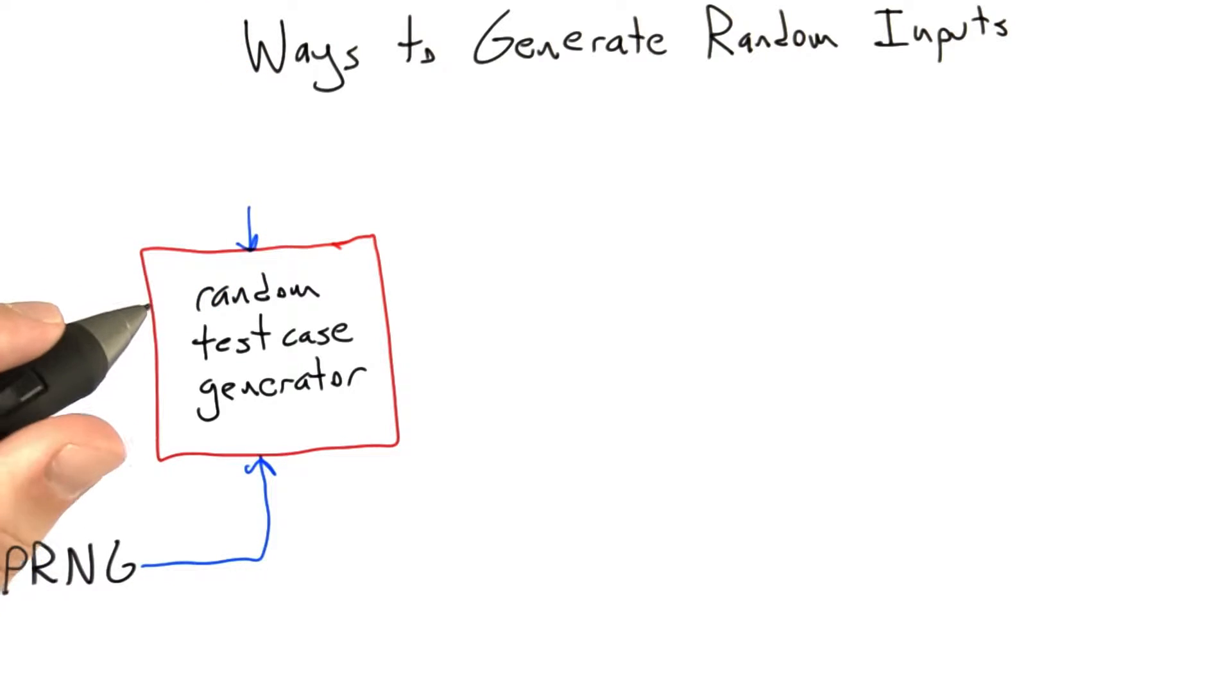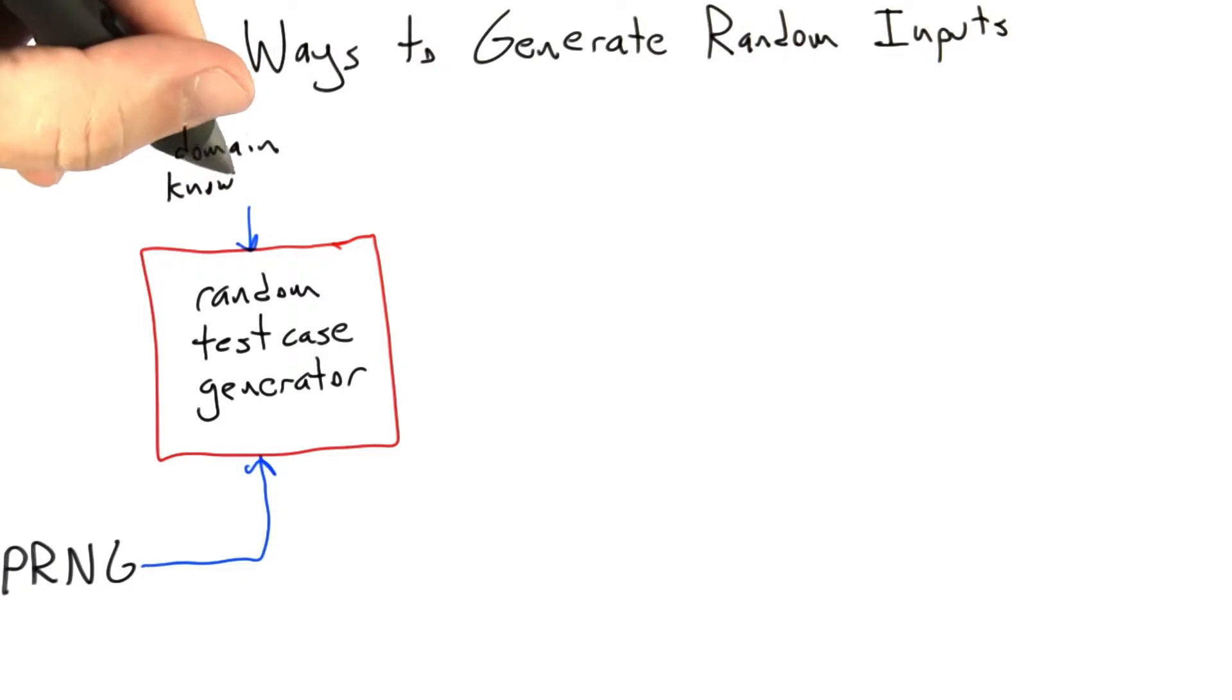Let's start with our diagram showing the random test case generator. If you recall from earlier in this unit, this test case generator has two inputs. It takes pseudo-random numbers from a pseudo-random number generator, and it's also predicated on some knowledge of the input domain, which is supplied by a human.